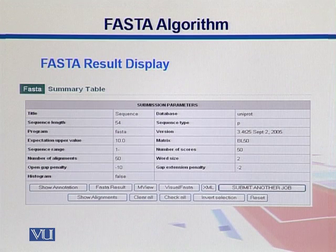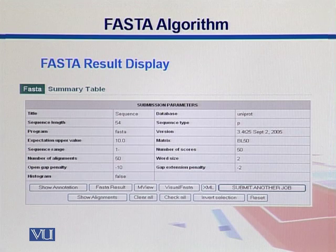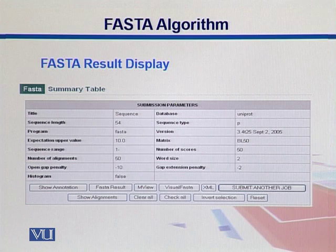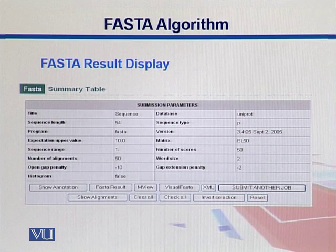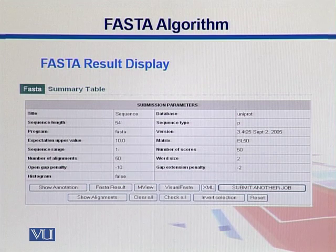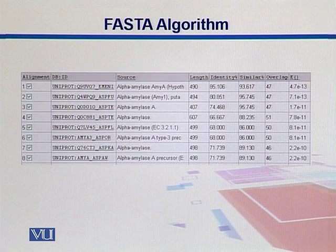Here is a summary of the results that FASTA gives us. We have the sequence length of 54, information about the program, an expectation upper value, and sequence range. We will look into these parameters in more detail later when we discuss scoring schemes. The output shows sequence type — in this case a protein — the version of the software used, matrix used below some 50, number of scores 50, word size used was 2, gap extension penalty was minus 2, and gap open penalty was minus 10.